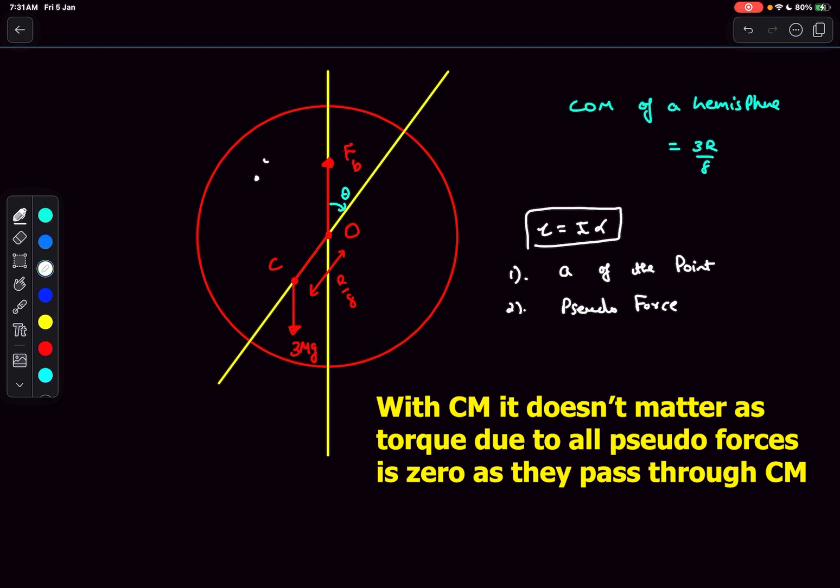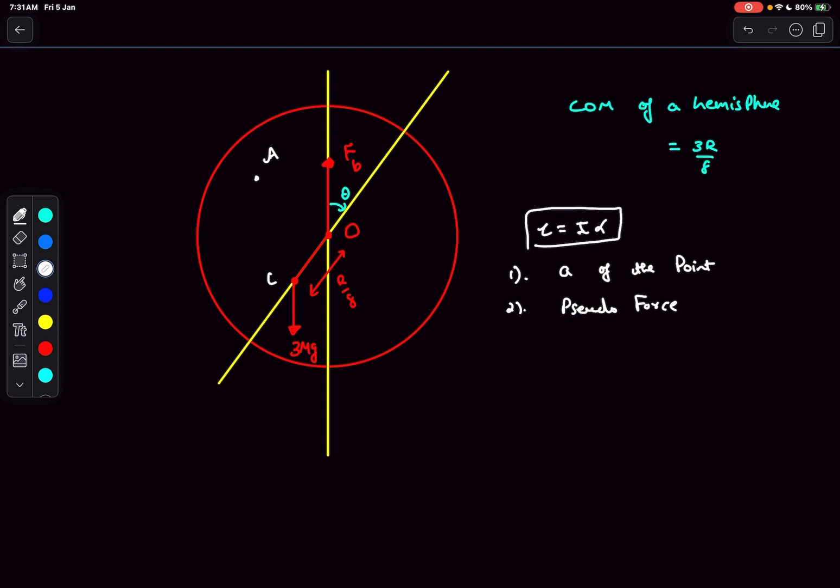Let's say we have to write tau equal to I alpha about this point A. Let's find the acceleration of A. As we have no omega, there won't be any centripetal component. Let's assume the angular acceleration of the sphere is alpha. The acceleration of point A is going to be R alpha in this particular direction, where R is this particular distance. More precisely, it will be alpha cross R. So if you want to write tau equal to I alpha about A, you have to account for the pseudo force due to this acceleration. You have to reverse and add an MR alpha component and account for the pseudo torque. Then you can write tau equal to I alpha about point A. The alpha of a rigid body is the same about any point. You also have to find the moment of inertia of the body about point A.